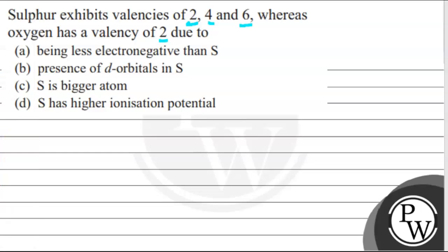If we look, sulfur exhibits valencies of 2, 4 and 6, this is due to the presence of vacant d orbitals in sulfur, which are not present in case of oxygen. Oxygen ke paas vacant d orbitals nahin hote hai. Sulfur ke paas vacant d orbitals hote hai. So, option B is the correct option.